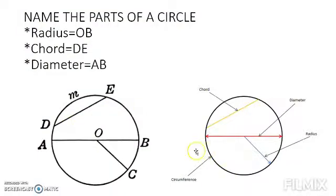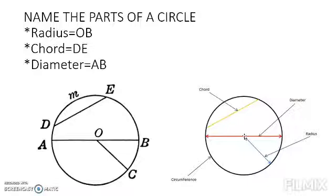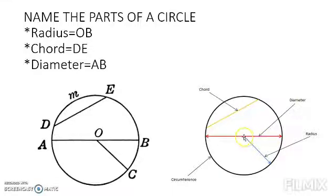Now you can see these circles where different colors show different parts with names given. The first part is the center, marked here as O. The center is the exact position from where we place our compass to draw a circle. The outermost boundary is called the circumference. A line which touches one end of the circumference to the other passing through the center is called the diameter.